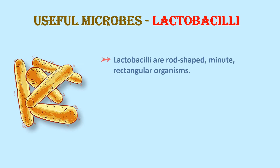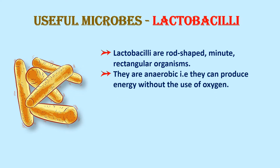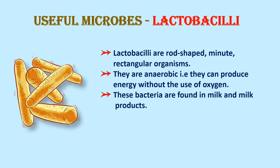The first useful microbe is lactobacilli. Lactobacilli are rod-shaped, minute — meaning very tiny — rectangular organisms. They are anaerobic, which means they can produce energy without using oxygen. These bacteria are found in milk and in products of milk like yogurt, cheese, butter, etc.